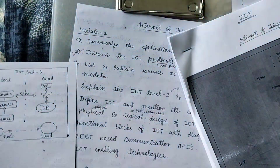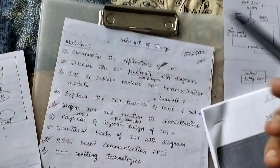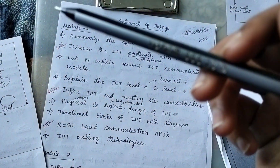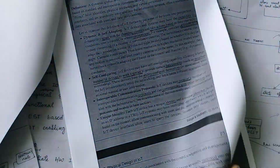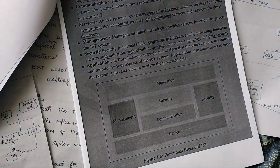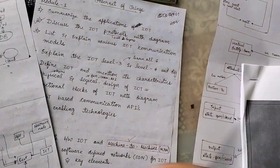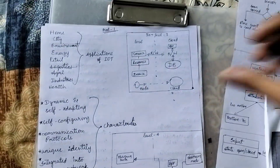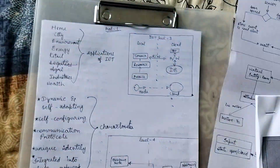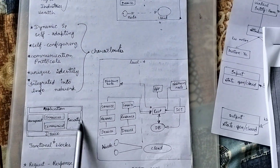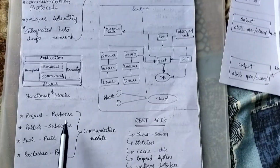Rule number one: learn the diagrams. Everything here is about diagrams - just draw the diagrams and then write some story related to them using the same keywords in your answers. That's it. For the first module I've written answers about the applications, major characteristics, and the functional block diagram with communication models.